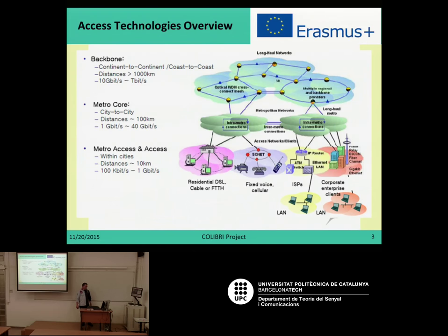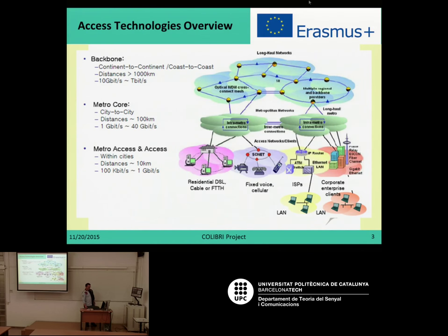First of all, let's talk about the scenario where fiber to the home is working. As you can see in this slide, networks are very complex and converging on different domains. On the one hand, we have backbone networks — usually very long distances with very high data rates, even up to terabits per second nowadays.